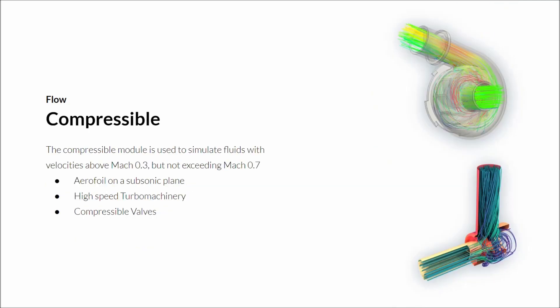The two previous modules assumed incompressible flow — that is, flow with no massive thermal gradients or high speeds above Mach 0.3. The compressible flow module is designed to tackle these types of flows. It can simulate fluids with speeds between Mach 0.3 and 0.7. Examples include airfoils on subsonic planes, high speed turbo machinery, and compressible valves.